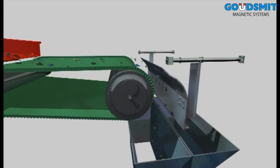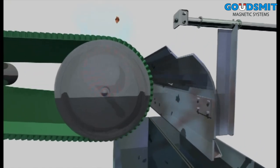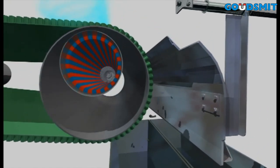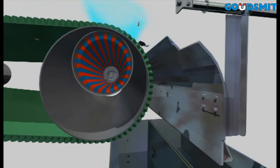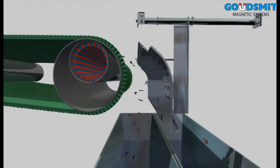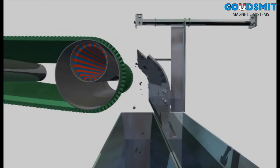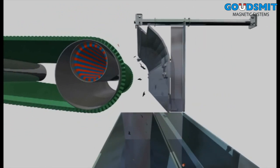The adjustable angle setting of the magnet rotor makes the eddy current separator suitable for almost all materials. The separation coverage for the valuable particles is horizontally and vertically adjustable. This way it is easy to achieve the best possible separation.